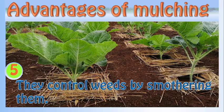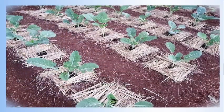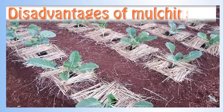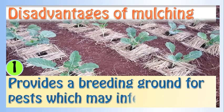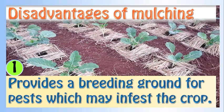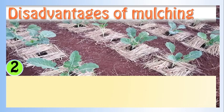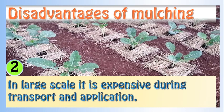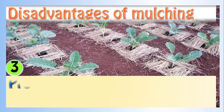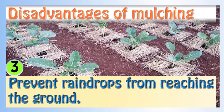Mulches have disadvantages too. The disadvantages of using mulch are: mulches provide a breeding ground for pests which may infest the crop; on a large scale, it is expensive to transport and apply mulch; and mulches can prevent raindrops from reaching the ground.